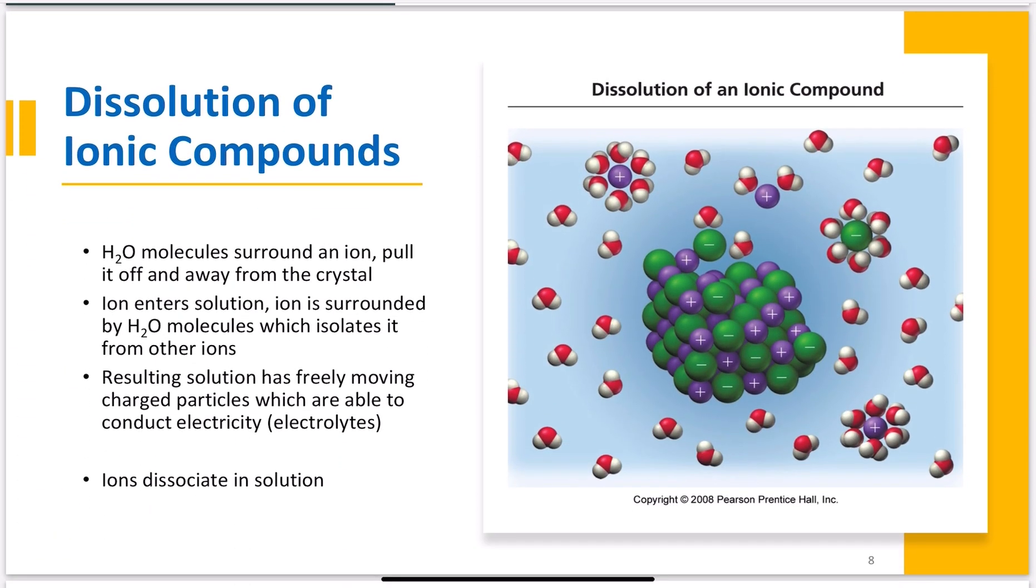So, dissolution of ionic compounds. Water molecules surround an ion and pull it off and away from the crystal. The ion enters the solution and is surrounded by the water molecules, which isolate it from the other ions. The resulting solution has freely moving charged particles which are able to conduct electricity - it's called your electrolyte. The ions dissociate in solution. Our water molecule has a general structure like this.